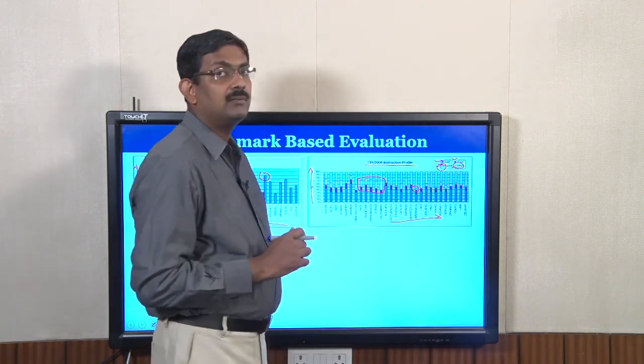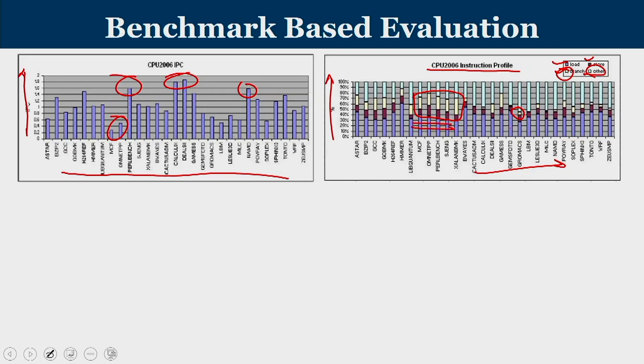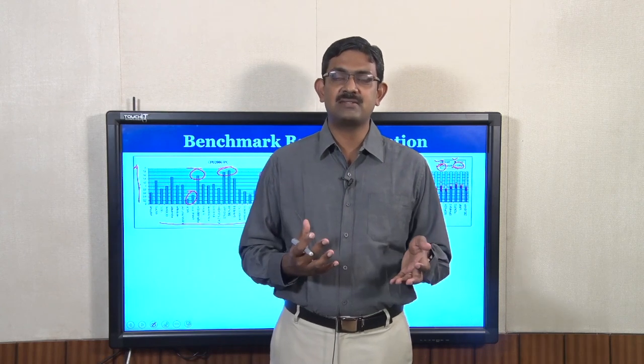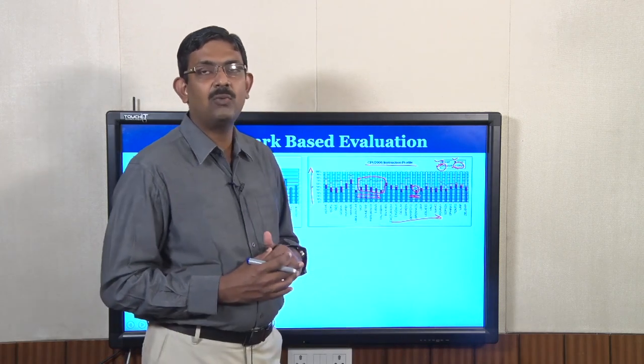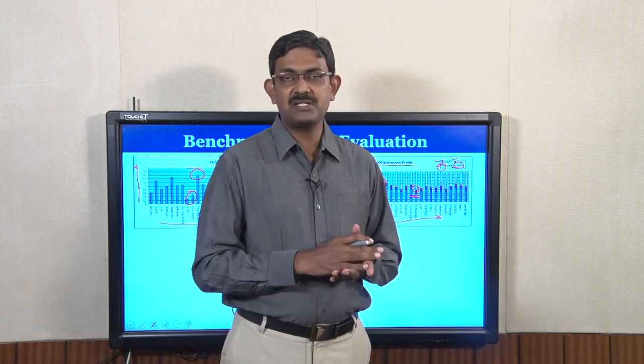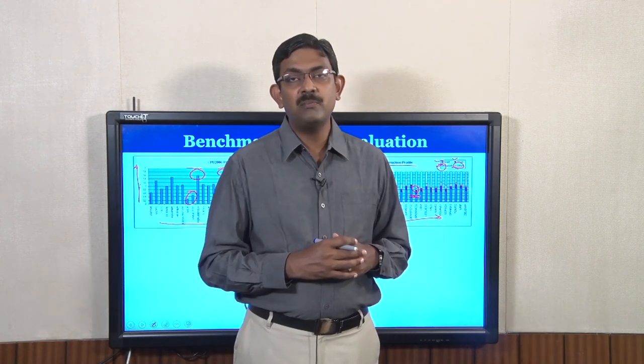Understanding the instruction split-up gives the hardware designer a better picture of whether any optimization on the hardware will be impactful or not. There are certain benchmarks with heavy numbers of branches and certain benchmarks with limited numbers of branches. When we use an advanced branch predictor, benchmarks with a rich mix of branch instructions will obviously get the benefit, while those with few branches will see minimal gains.